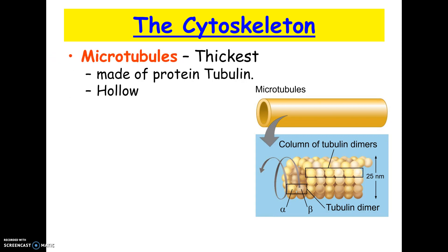The cytoskeleton consists of three parts. I'm just going to give you general explanations. The first part is called microtubules. You need to know that they're called microtubules, they're made of tubulin, and of the three, they're the biggest.